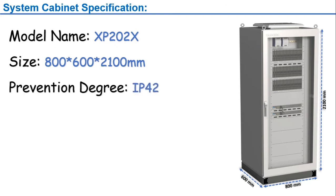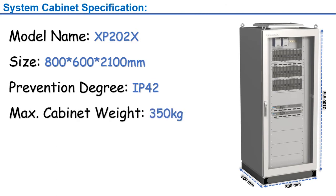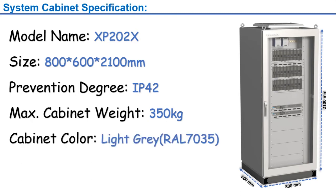The system cabinet normally has an IP54 rating, but it can be customized. The maximum cabinet weight is 350 kg. The cabinet color normally used is light gray RAL 7035, but it can also be customized.